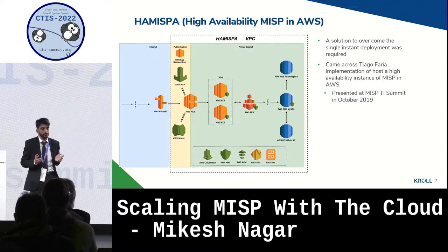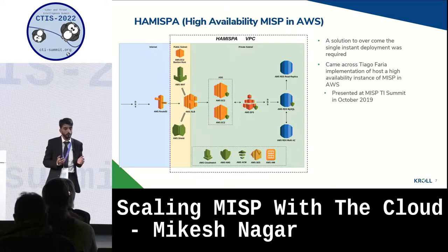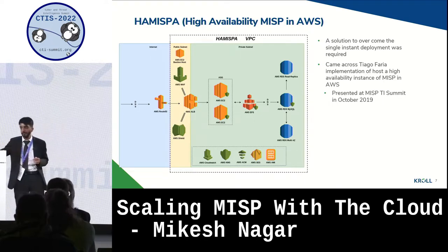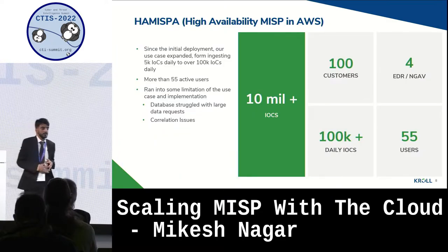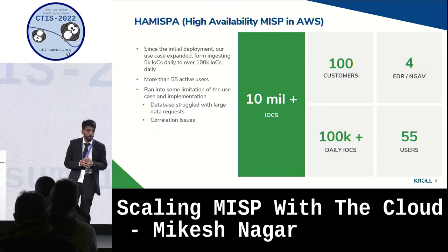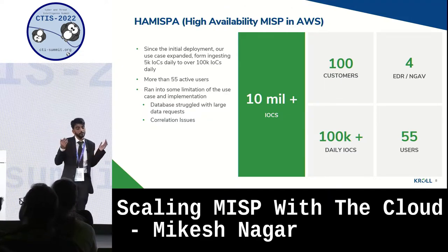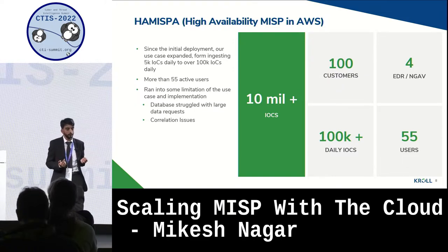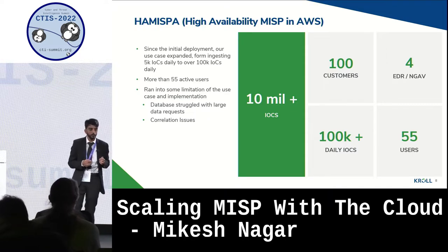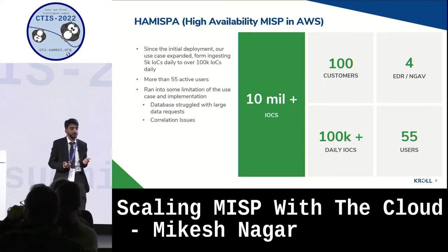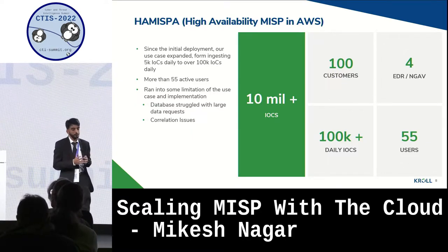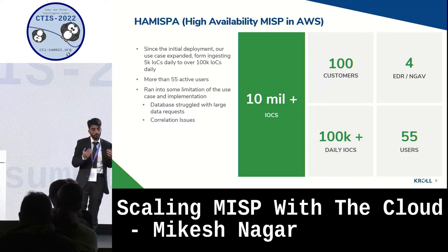A huge shout-out to Tiago for sharing this with the community, because it was something we were looking for and it solved the problem at the time. Since the initial deployment, we then scaled up with HA-MISP-A, ingesting over 100 IOCs on a daily basis, serving up to 100 customers, and four EDR and AV detection technologies. Our active users actually increased from 10 to 55 users, but even with this implementation we did run into some limitations — mainly the database struggling with large data requests due to the number of correlations going simultaneously, as well as Cortex running in the background for analyzing those IOCs.